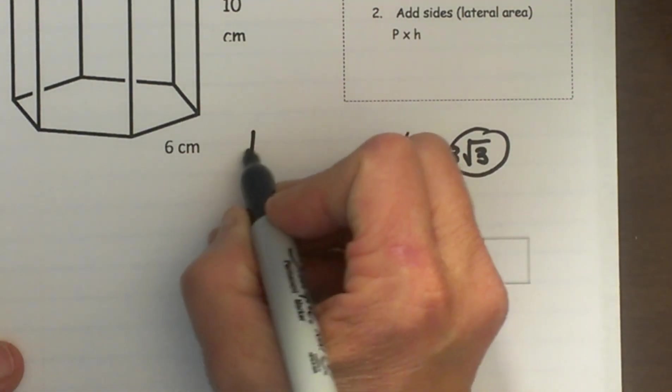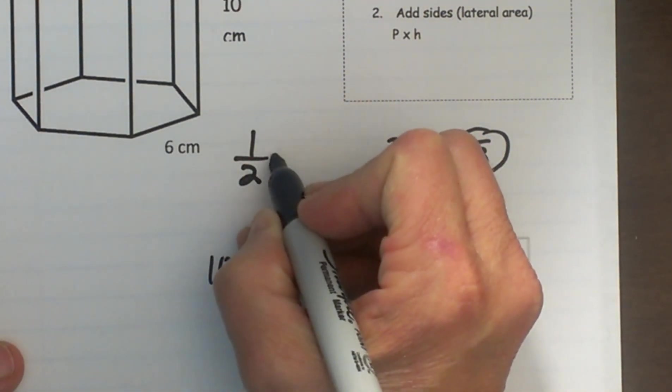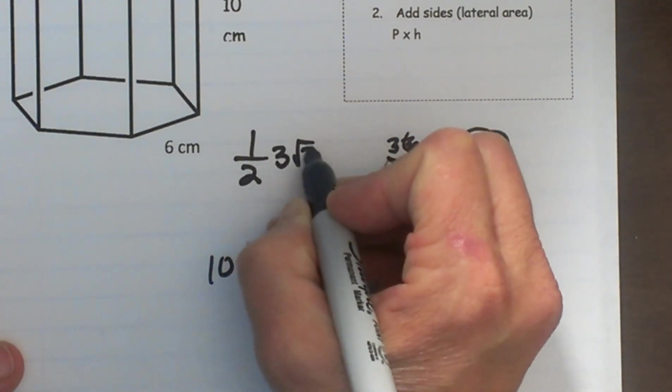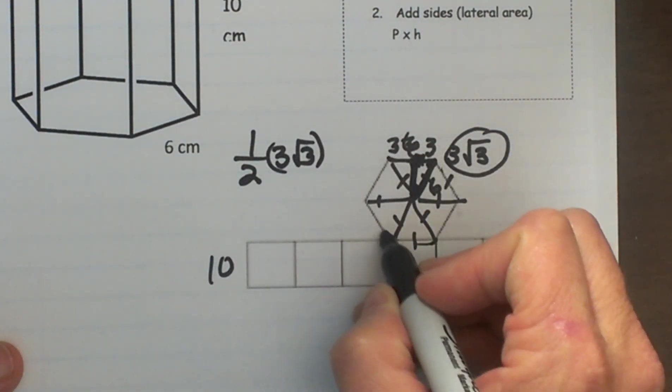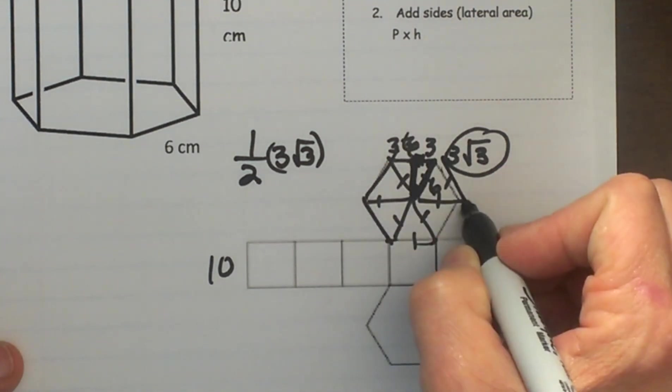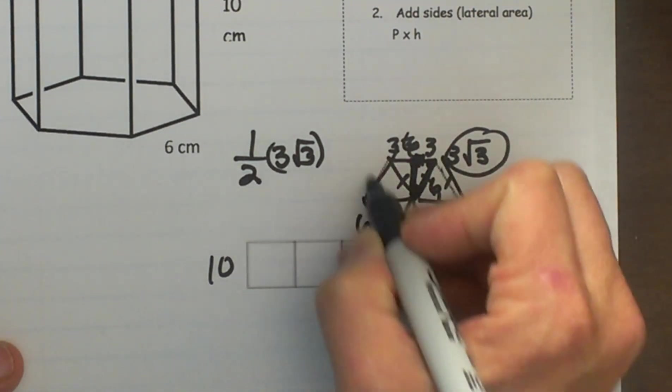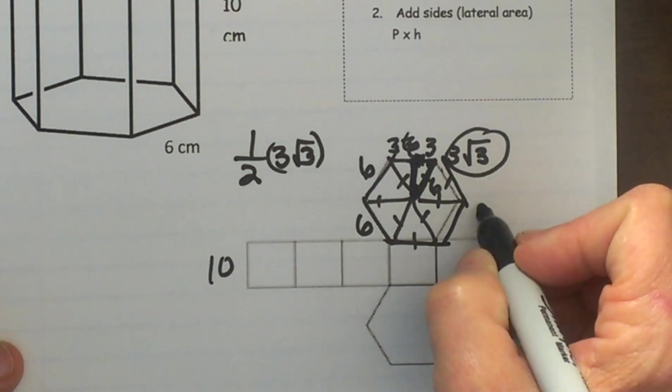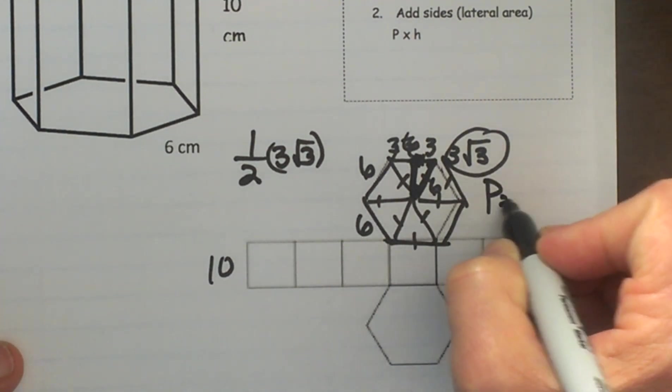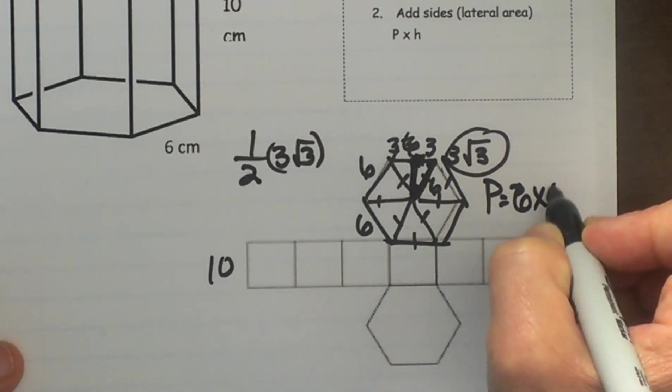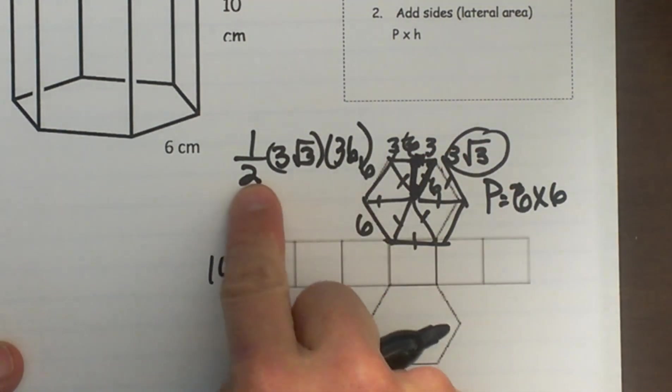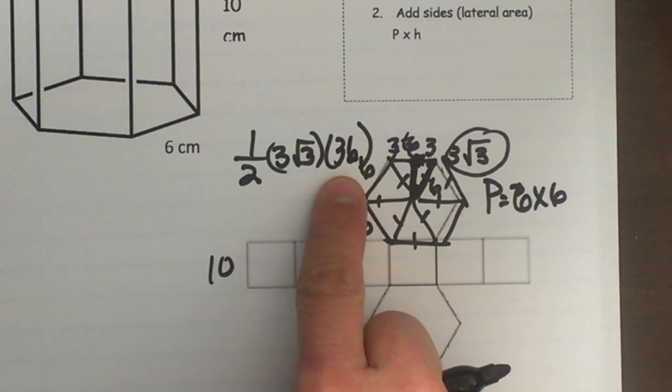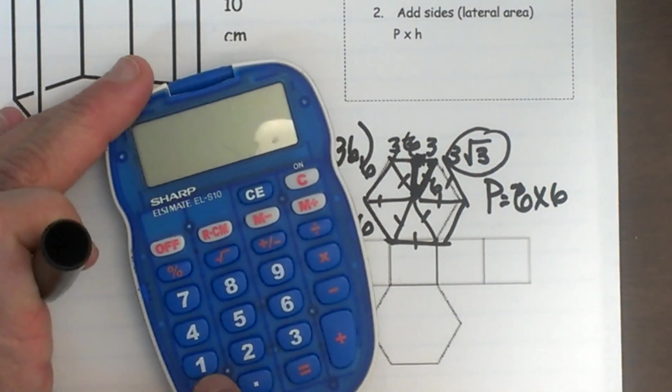So I have one half of my apothem which is 3 square root of 3 times the perimeter. What is the perimeter of this base? I have 6 equal sides and there are 6 each. So to find the perimeter I just take 6 times 6 sides or 36. So that is my formula: one half, 3 square root 3 times 36. So let's multiply that out.